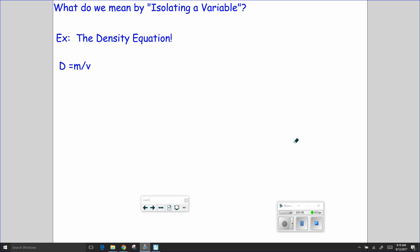Well, let's say I want to rearrange this equation to solve for mass. In order to isolate that variable, what I could do is multiply both sides by V. And if I multiply both sides by V, M is now isolated to be equal to the density times the volume.